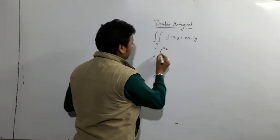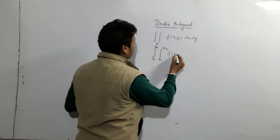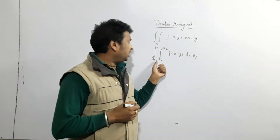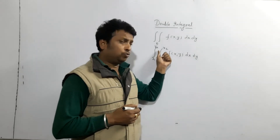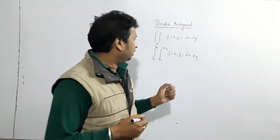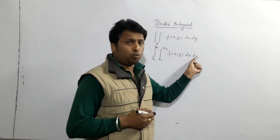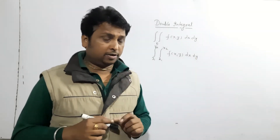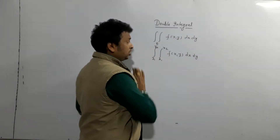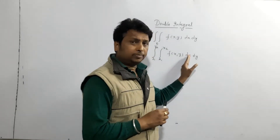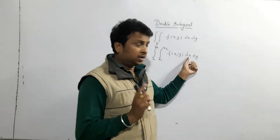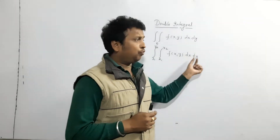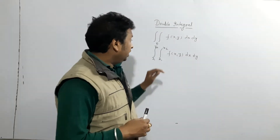When limits x1, x2, y1, y2 and f(x,y) dx dy are given, there are two types. When all limits are constant — x1, x2, y1, y2 all constant — then integrate first with respect to whichever variable is on the inside (given first). When all limits are constant, it doesn't matter which one is integrated first, but integrate with respect to the inside variable first and then the outer one.